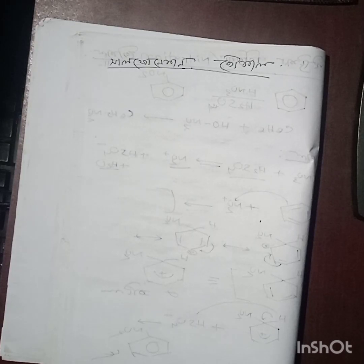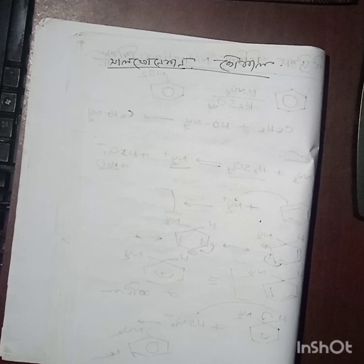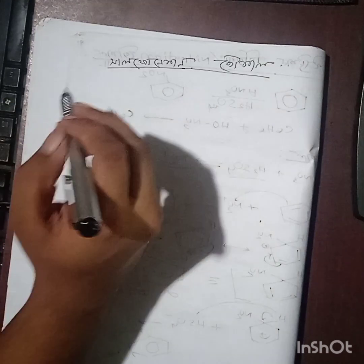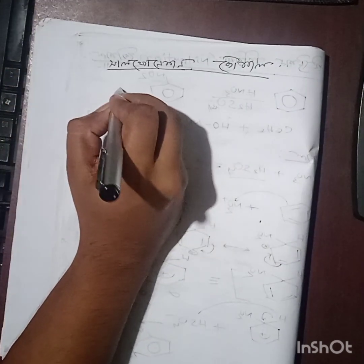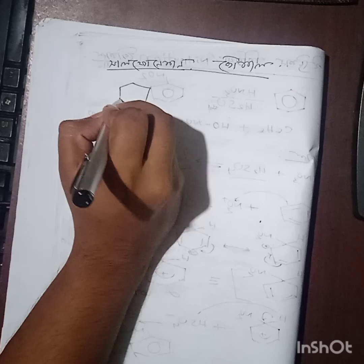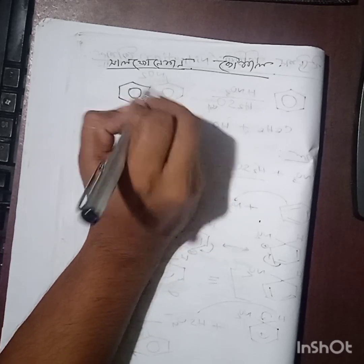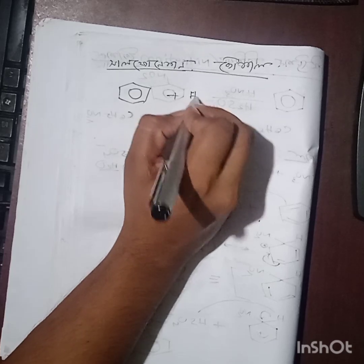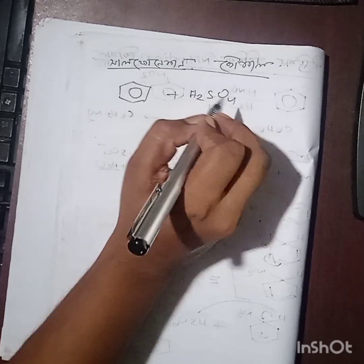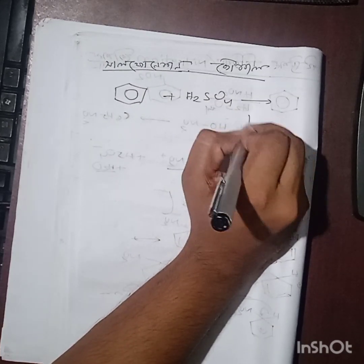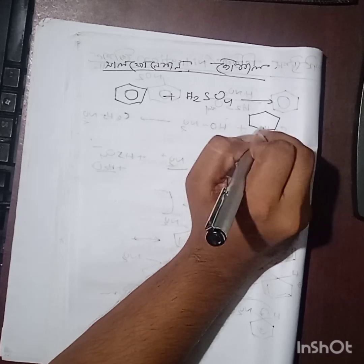So sulfonation of benzene is actually an important electrophilic substitution reaction. First we have benzene, then we take sulfuric acid H2SO4. In benzene one hydrogen gets replaced to give benzene sulfonic acid with SO3H group.